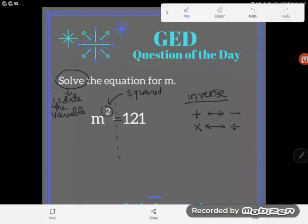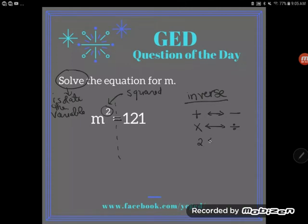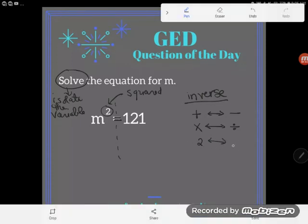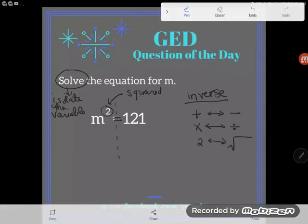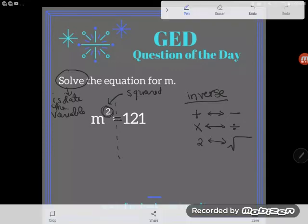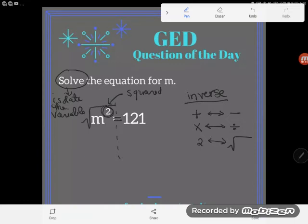But do you know what the opposite of square is? A lot of students don't know. The opposite of square, that little floating two, mind you not a two with its feet on the floor, is square root. So if I want to get rid of a square, what I'm going to do is I'm going to square root the entire left-hand side of the equation.